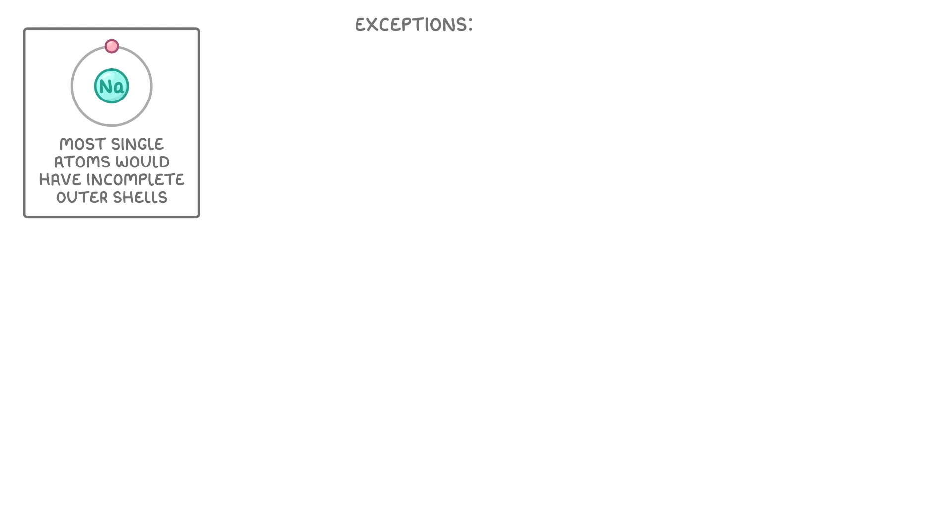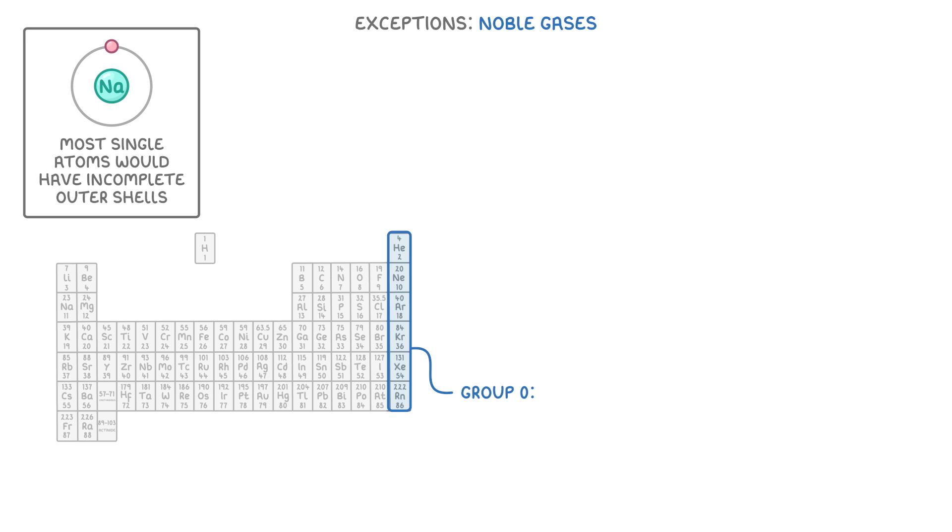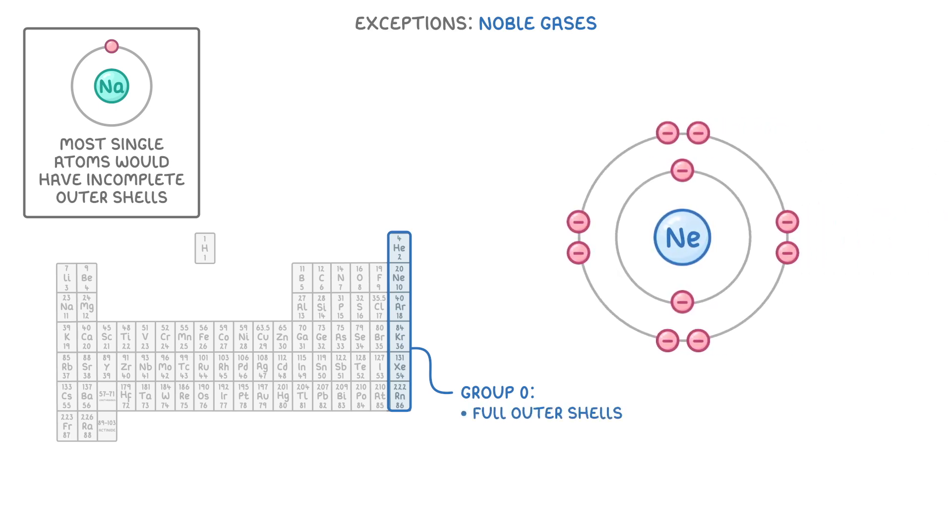However, there are some exceptions to this. The noble gases in group 0 of the periodic table all have completely full outer shells, as we can see with neon. And because of this, they don't want to lose or gain any electrons. And so they don't really react with anything.